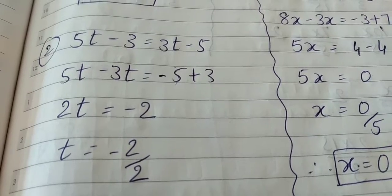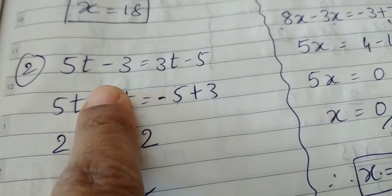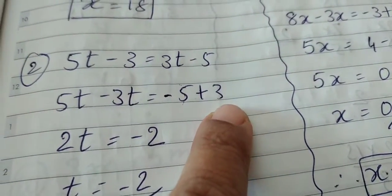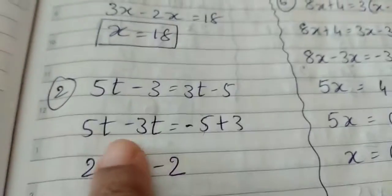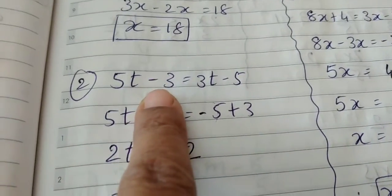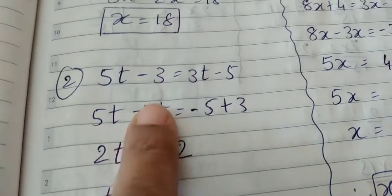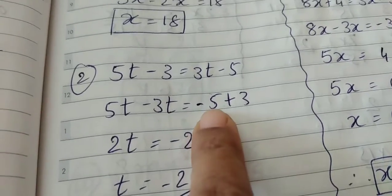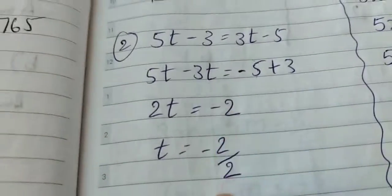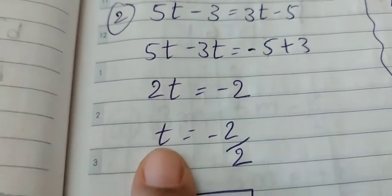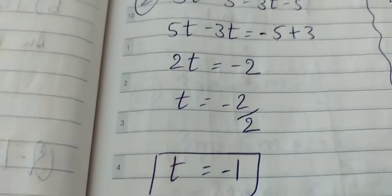Here you see 5t minus 3 is equal to 3t minus 5. Taking 3t on the other side of equal to sign and minus 3 on the other side, just to satisfy the need of the like terms. 5t minus 3t is equal to 3 when it goes on the other side becomes positive 3, so minus 5 plus 3. 5 minus 3 is 2, 2t is equal to minus 2. Because minus 5 is bigger and carrying negative sign, so the answer is also negative. T is equal to minus 2 divided by 2 gives you minus 1.